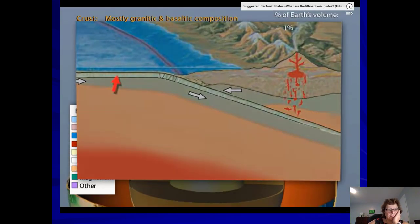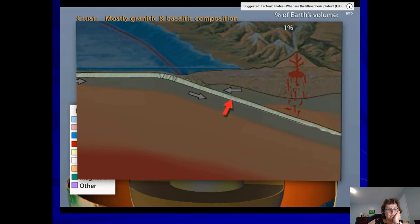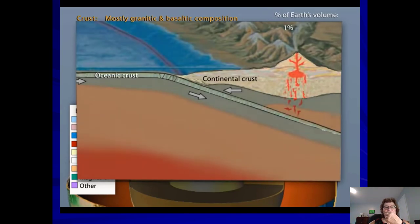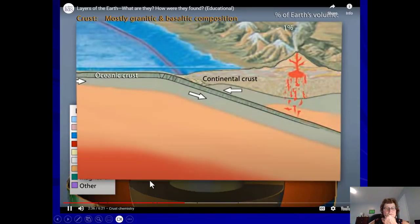The crust ranges from 5 to 10 kilometers thick in the dense basaltic oceanic crust and up to 75 kilometers in the thicker, less dense granitic rock of the continental crust. This difference in density and thickness of these two types of crust is the reason why the Earth has oceans and continents.